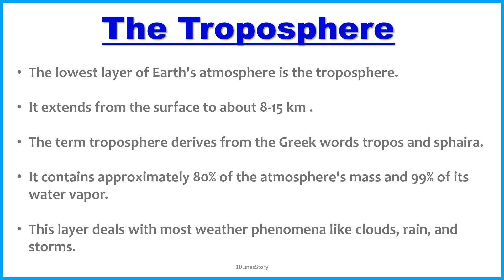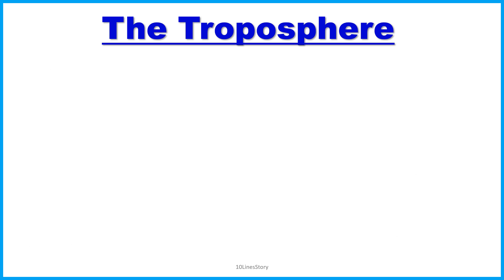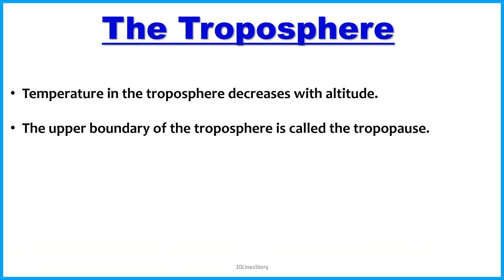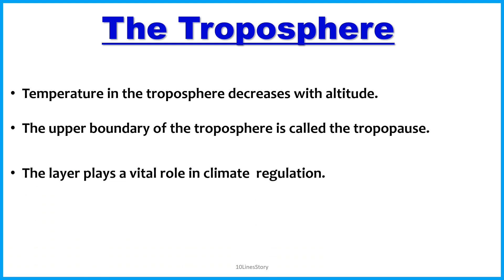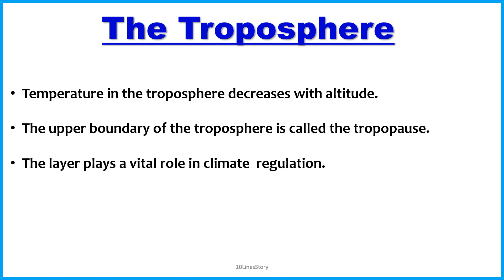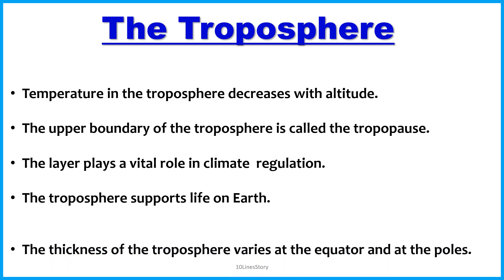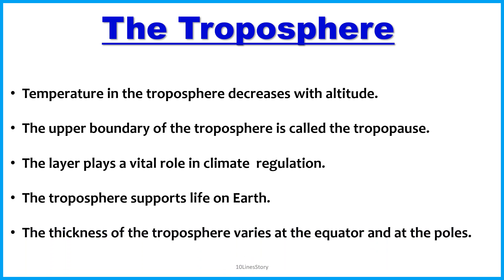Temperature in the troposphere decreases with altitude. The upper boundary of the troposphere is called the tropopause. The layer plays a vital role in climate regulation. The troposphere supports life on Earth, and the thickness of the troposphere varies at the equator and at the poles.